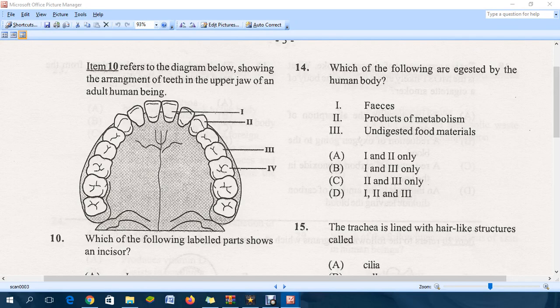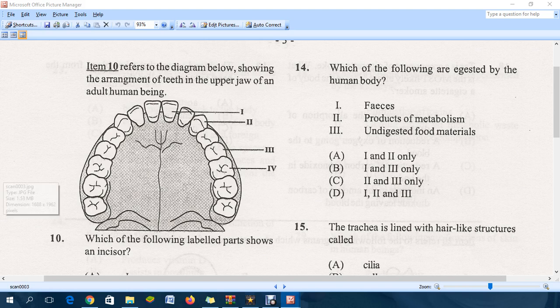Good night, let's continue the 2009 specimen paper moving on to question 10. Question 10 refers to the diagram below showing the arrangement of teeth in the upper jaw of an adult human being.